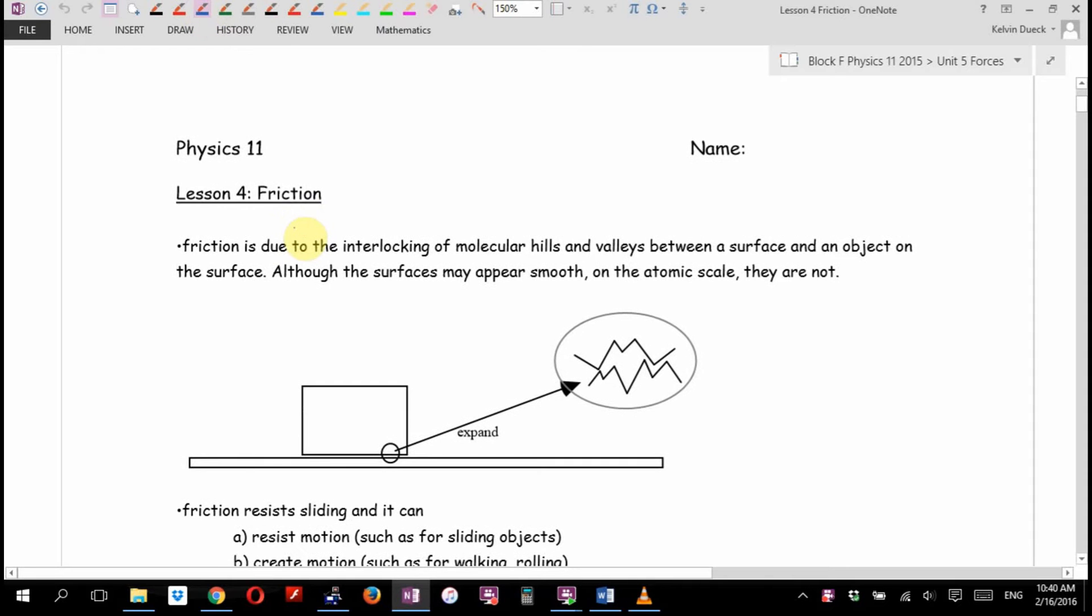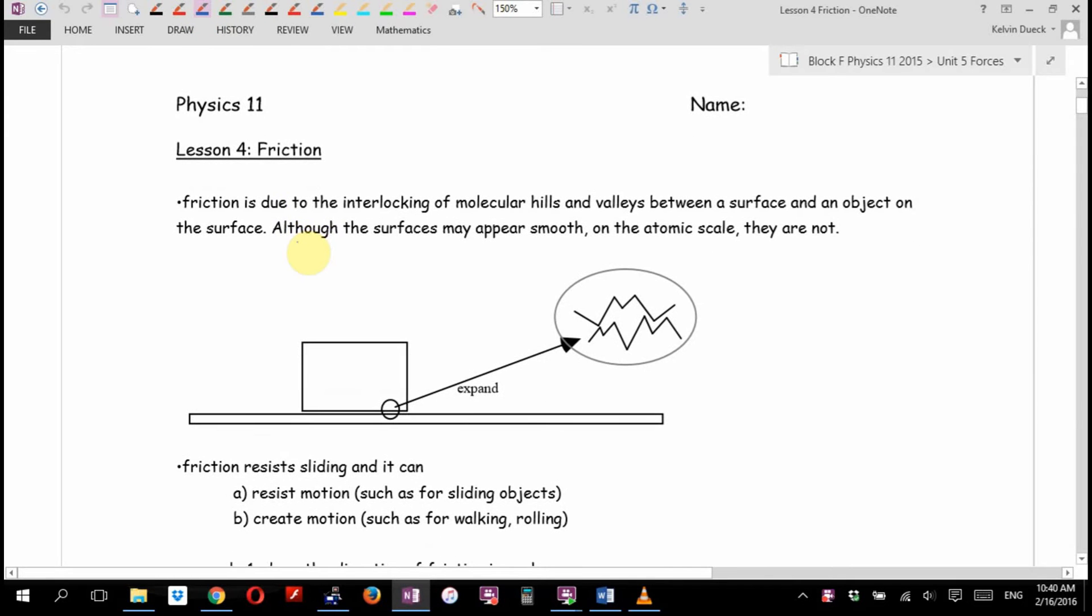Friction is due to the interlocking of molecular hills and valleys between a surface and an object on the surface. Although surfaces may appear smooth, if you zoom in, for example between your book, your binder, and the table, although it looks smooth to our eyes, you would see on the microscopic or atomic scale, they would be all jagged and bumpy. And when those slide across each other, they interlock and they cause resistance.